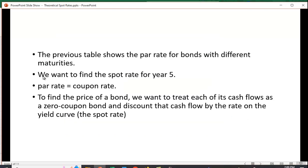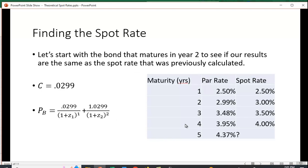The par rate that's given in that table equals the coupon rate. That is, the bond is selling for its par value. To find the price of the bond, we want to treat each of its cash flows as a zero coupon bond and discount the cash flow by that rate on the yield curve, that spot rate.